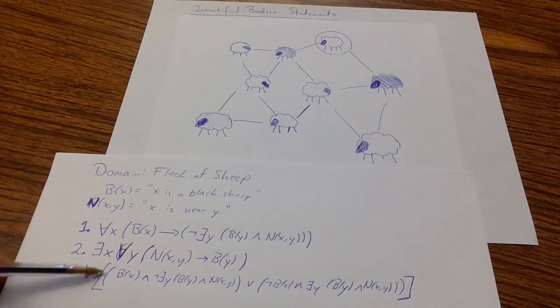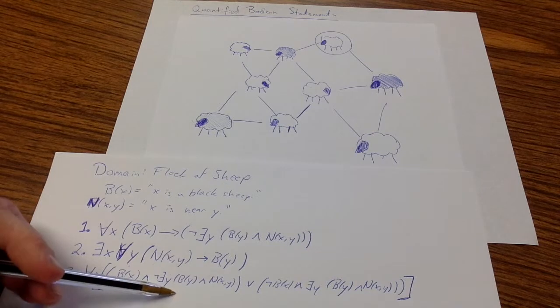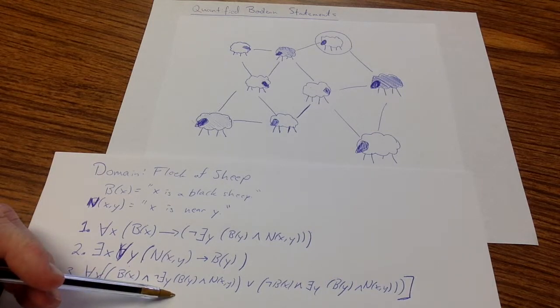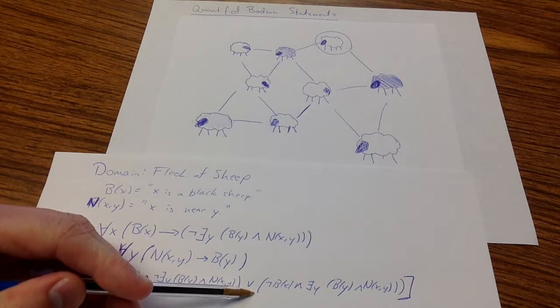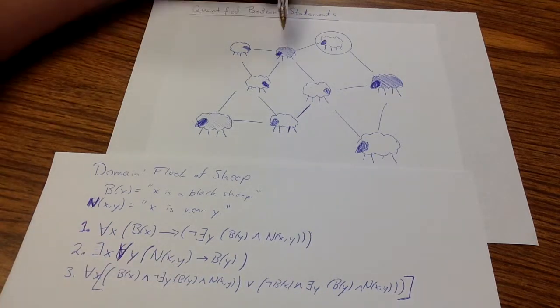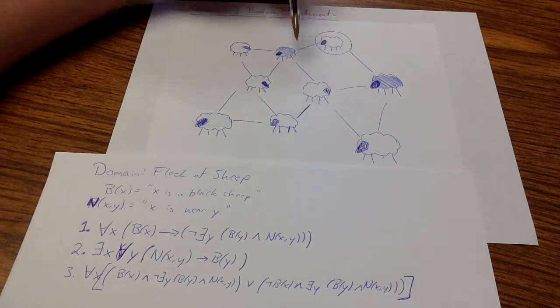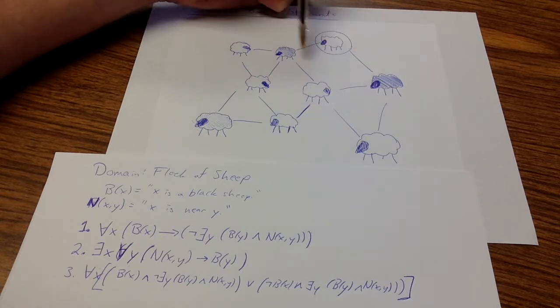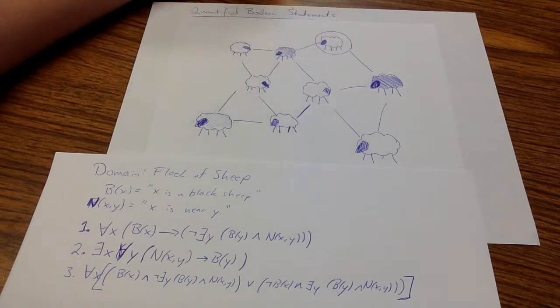So this is essentially saying, for all x, if I'm black, then I need to have that I'm not near a black sheep. Or, if I am white, then I am near a black sheep. So here I see that all my black sheep are away from white ones, but also all of my white sheep are nearby at least one black sheep.